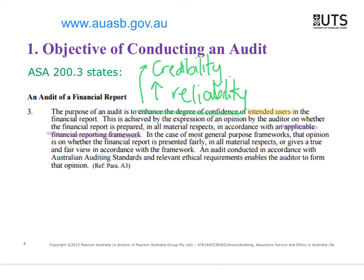Our intended users are generally our shareholders. Our applicable financial reporting framework — how we know whether people are doing the accounting correctly — is the AASBs. So that's the objective of doing the report.